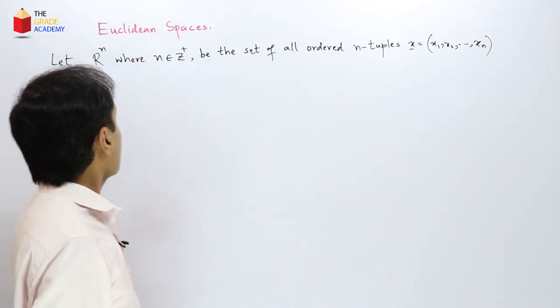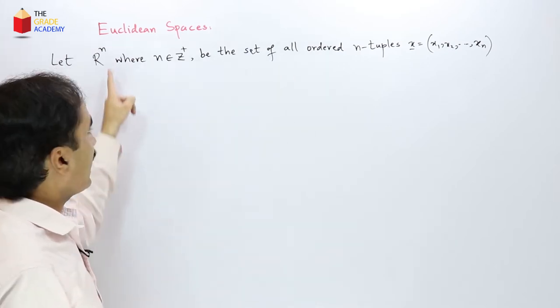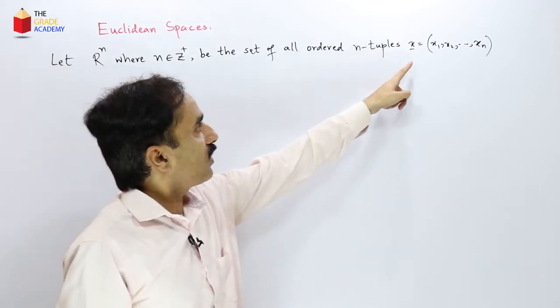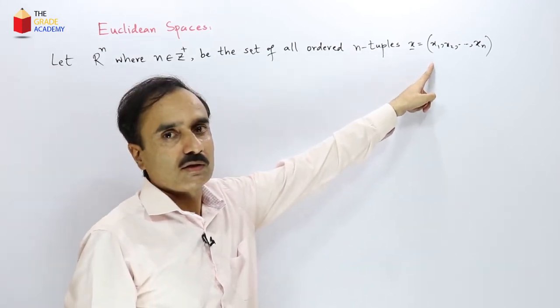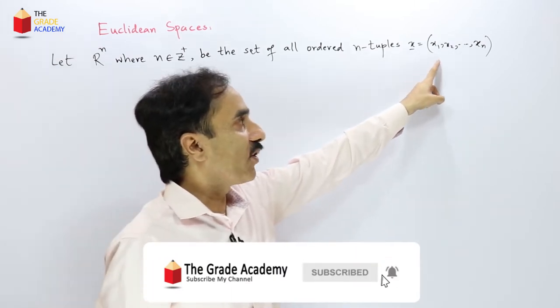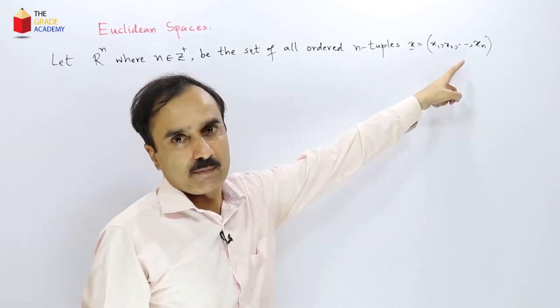So we are considering a set consisting of a set Rn where n is some positive integer and this set consisting of all ordered n-tuples. So this is an ordered n-tuple. n-tuple means this is an n-tuple in n dimension.